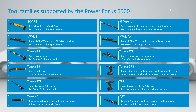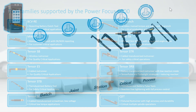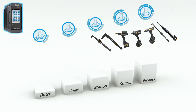Looking at this from a high level, we can see there are 12 different types of tool families that now work with the PowerFocus 6000 — everything from a battery clutch tool all the way up to a fixtured QST tool and just about everything in between. There are five different virtual station types in the 3.0 software, and the critical and process types are very similar to what we've had in the past, doing a great job of supporting our high-end tools with high functionality and configurability.